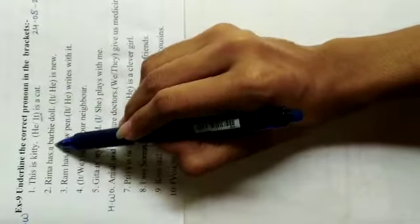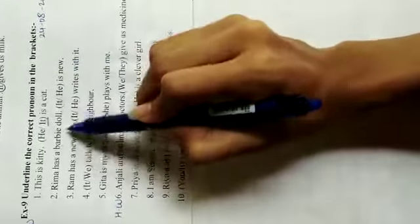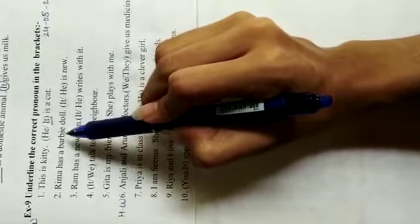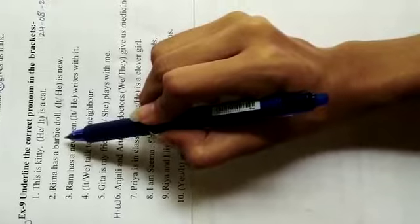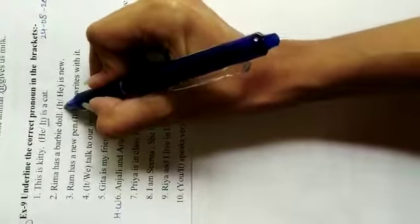Number 2. Rima has a barbie doll. It or he is new. Here we are talking about barbie doll. Barbie doll is a toy. For toy, which pronoun we use? We use it. So underline it.